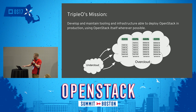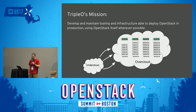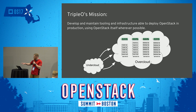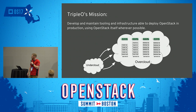Triple O's mission statement is we're an OpenStack deployment tool where we actually use OpenStack to deploy OpenStack itself. We really focus on using the OpenStack projects that expose end-user APIs. So you have two OpenStack clouds — an undercloud and an overcloud — and these are two separate OpenStack clouds.